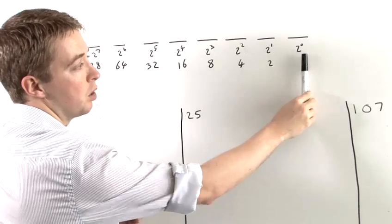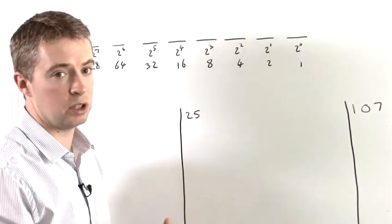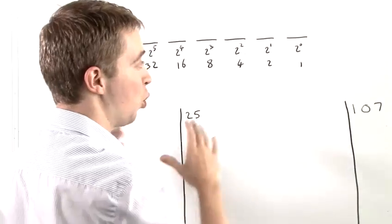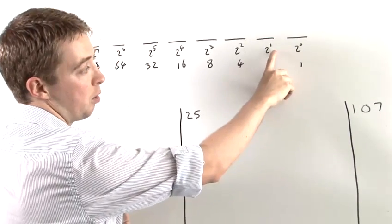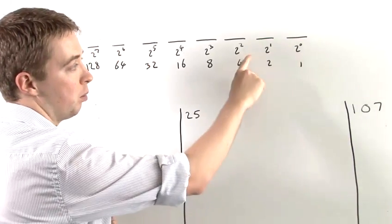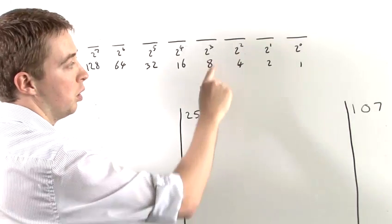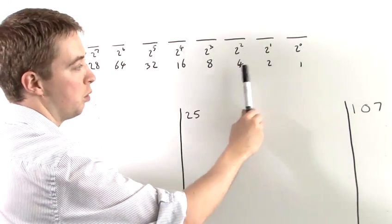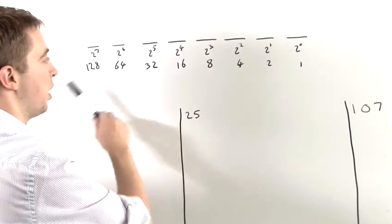So the first digit represents two to the power of zero. That can either be one or zero, as can all of the digits. The second digit represents two to the power of one, the third two to the power of two, the fourth two to the power of three, and so on. So we have one, two, four, eight, 16, 32, 64, and 128.